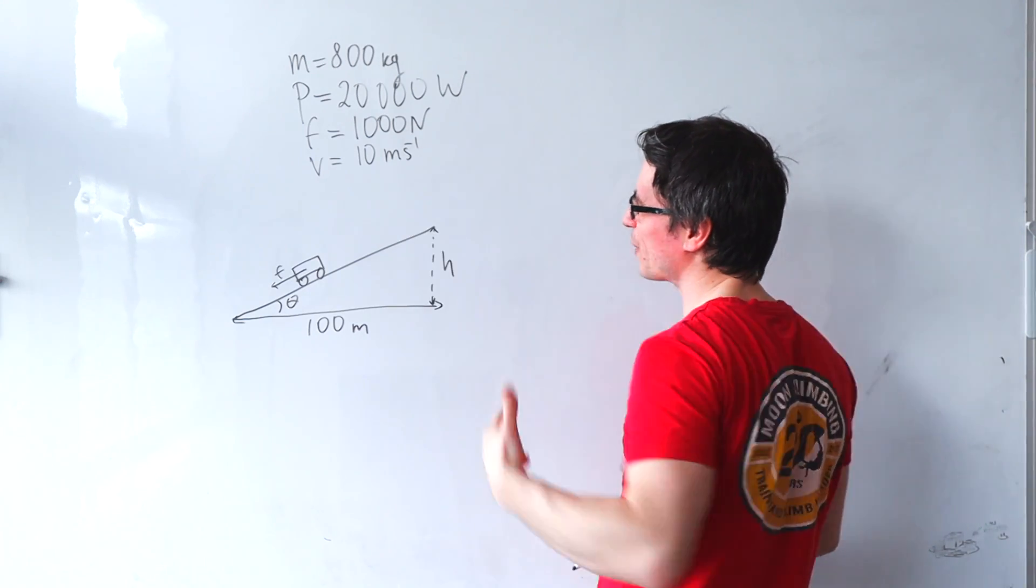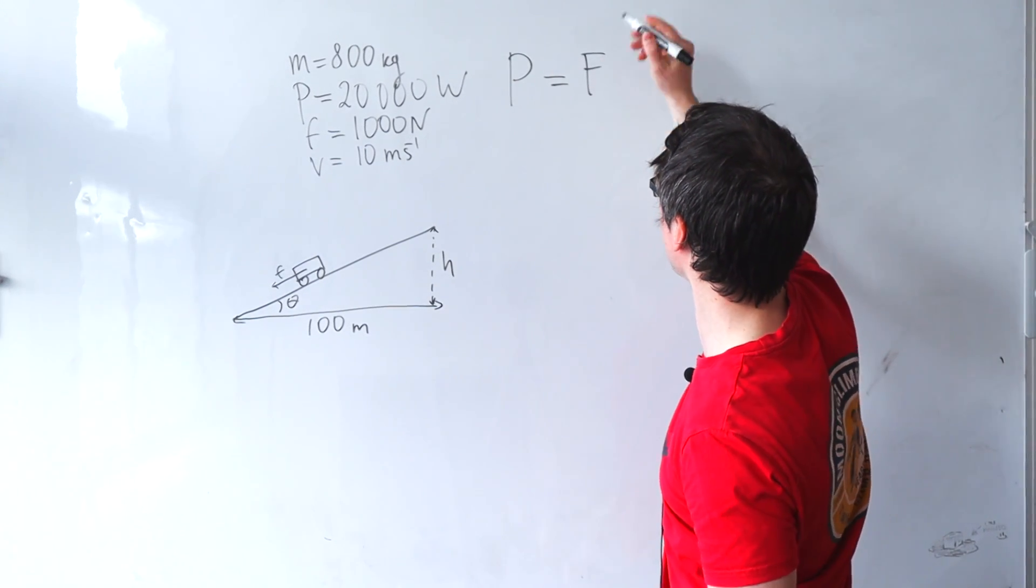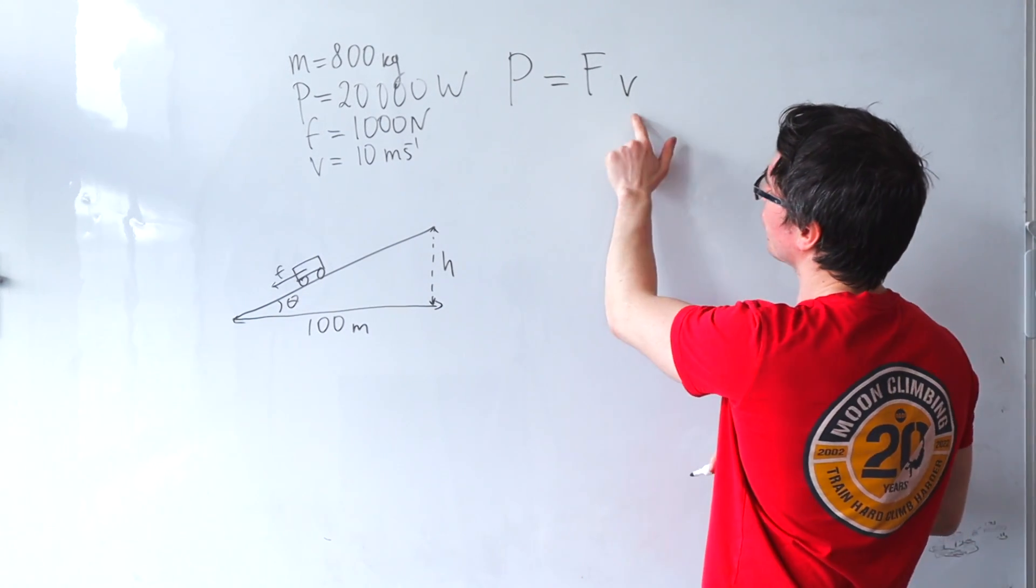Anytime we have a power output and a constant velocity given, we typically tend to use this equation: power is equal to force times velocity.